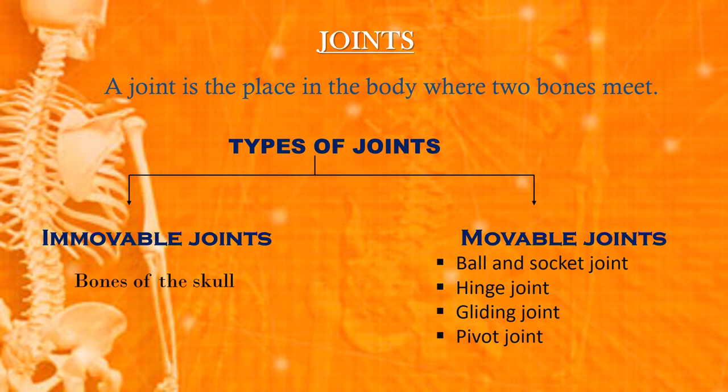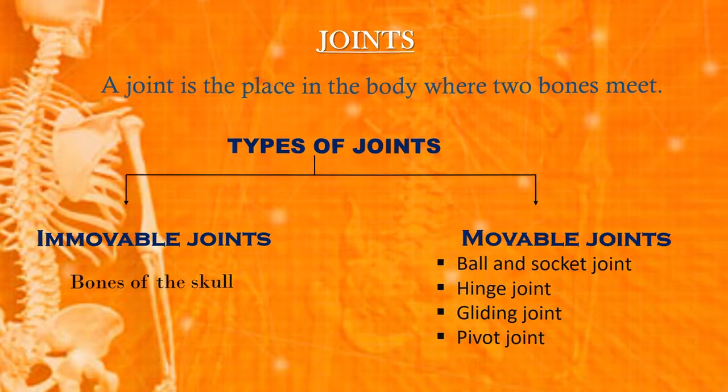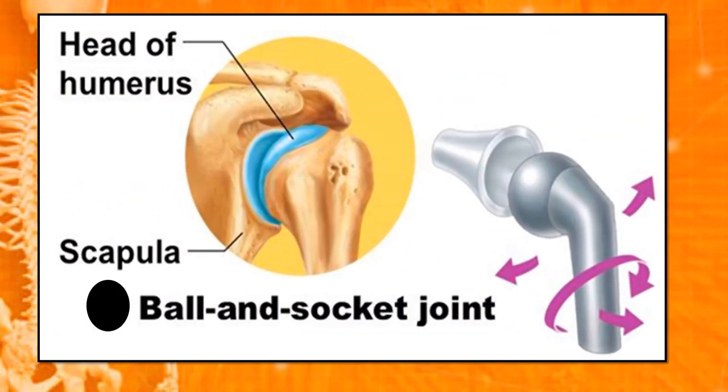The four types of movable joints are: ball and socket joint, hinge joint, gliding joint, and pivot joint. Let's study about the types of joints.